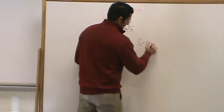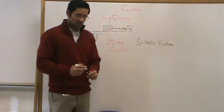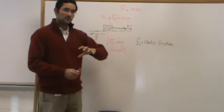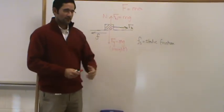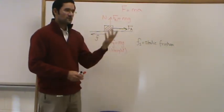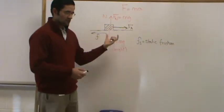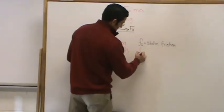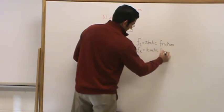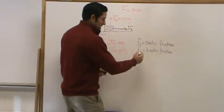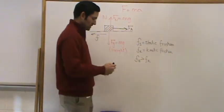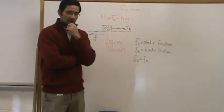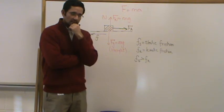Static friction is when an object is at rest and not moving. To get the box to move, the force you are applying has to be greater than the static friction — to accelerate it from zero to a particular velocity. Once the box starts moving and you want to keep it moving at constant speed, you have to exert a force that counters kinetic friction, because once an object starts moving, you are fighting against kinetic friction.